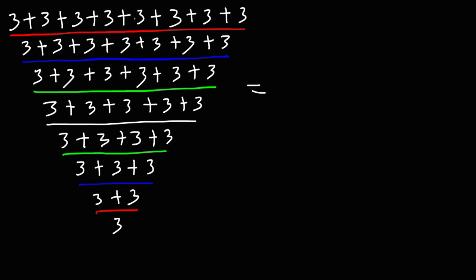Well, let's break it down. Starting with the top, we have a total of eight threes that we're adding. So adding three eight times is basically multiplying three by eight. Multiplication is repeat addition.